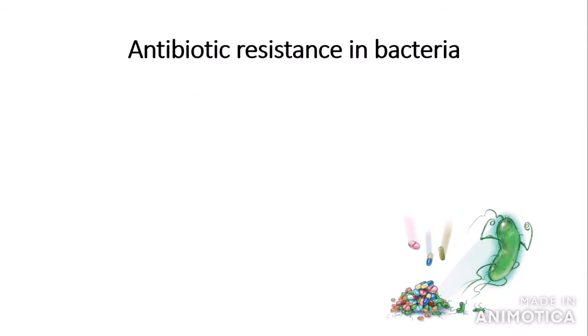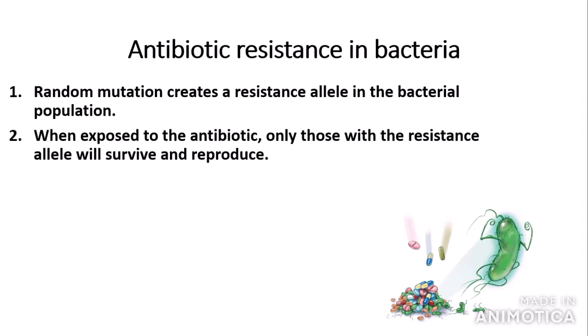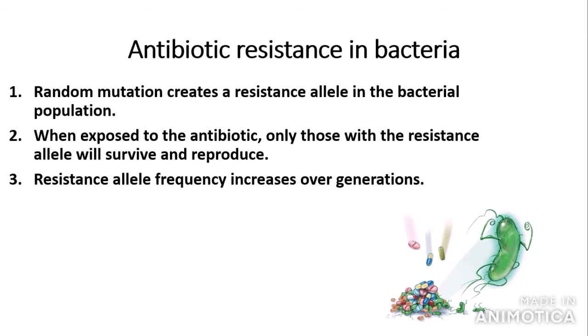You need to know how to explain directional selection in the context of antibiotic resistance in bacteria for AQA. A random mutation creates a resistance allele in the bacterial population, meaning those bacteria are resistant to antibiotics and are not killed by them. When these bacteria are exposed to the antibiotic, only those with the resistance alleles will survive and reproduce. The bacteria that aren't resistant die, and the resistance allele frequency increases over generations, which poses a great threat to the human race.